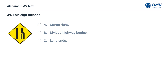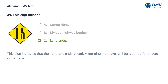This sign means: A. Merge right. B. Divided highway begins. C. Lane ends. Correct answer: C. This sign indicates that the right lane ends ahead, and a merging maneuver will be required for drivers in that lane.